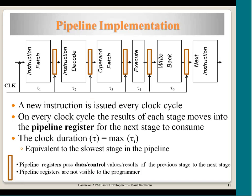Pipeline registers pass both data values and control signals. For example, in ADD R1, R2, R3 — the decode stage reads R2 and R3 as operands and determines that an ADD operation is needed with no barrel shifter, and the result must go to R1. This information — the destination register R1 and the ADD control signal — is passed through pipeline registers so that when the instruction reaches the writeback stage it knows to write the result into R1.